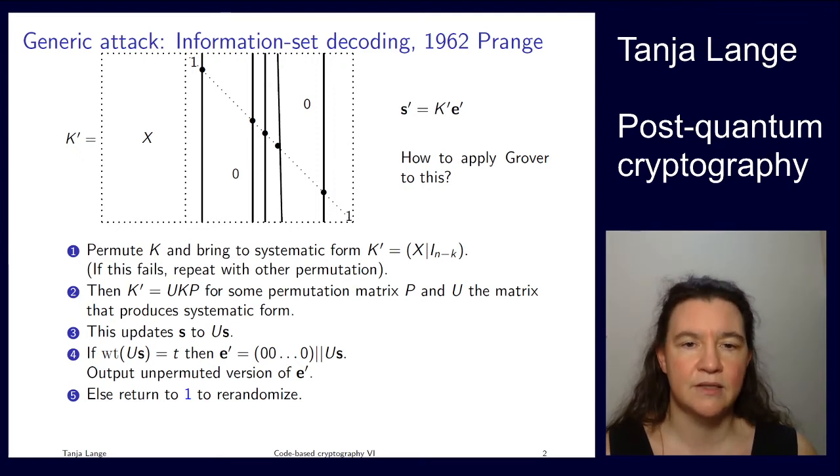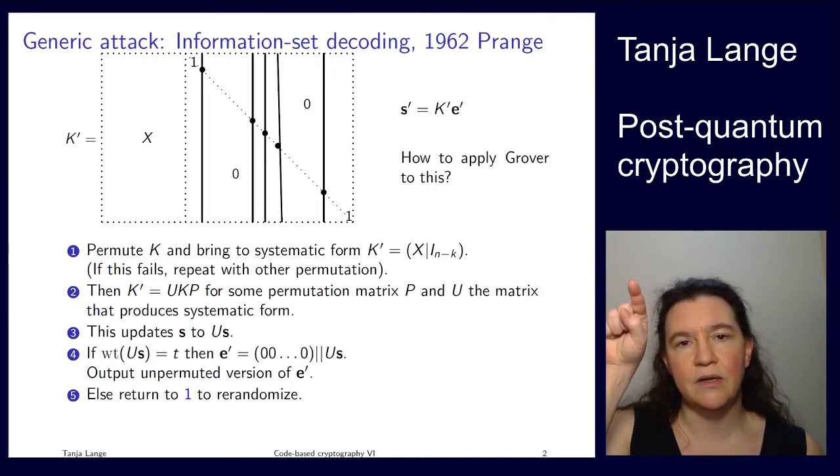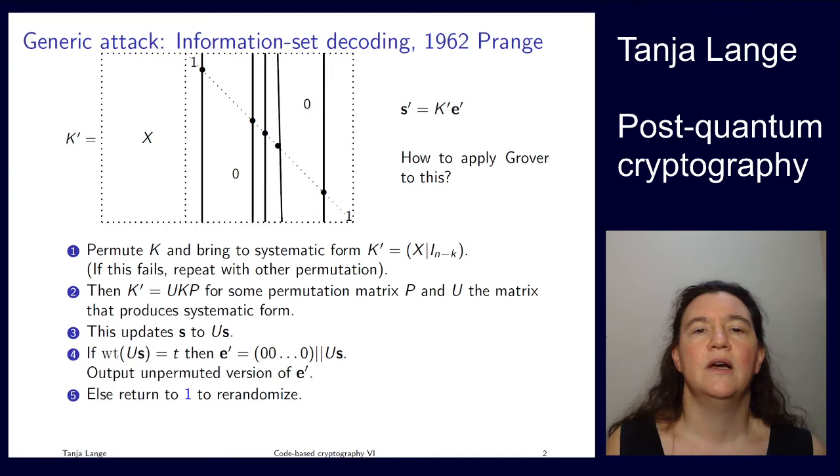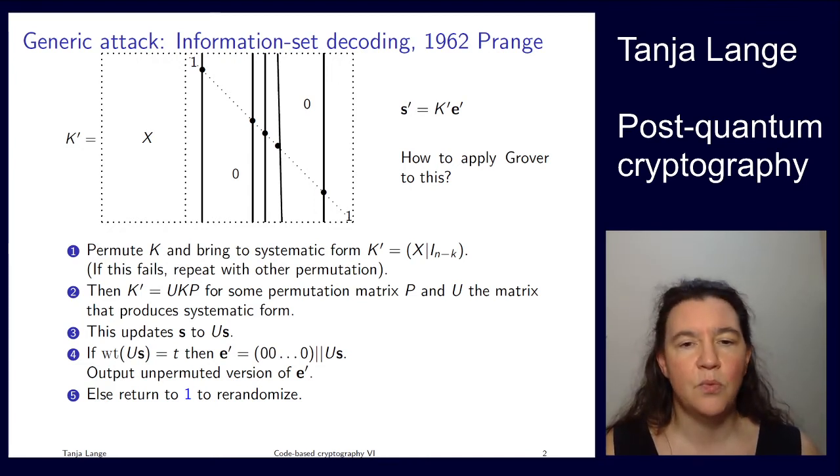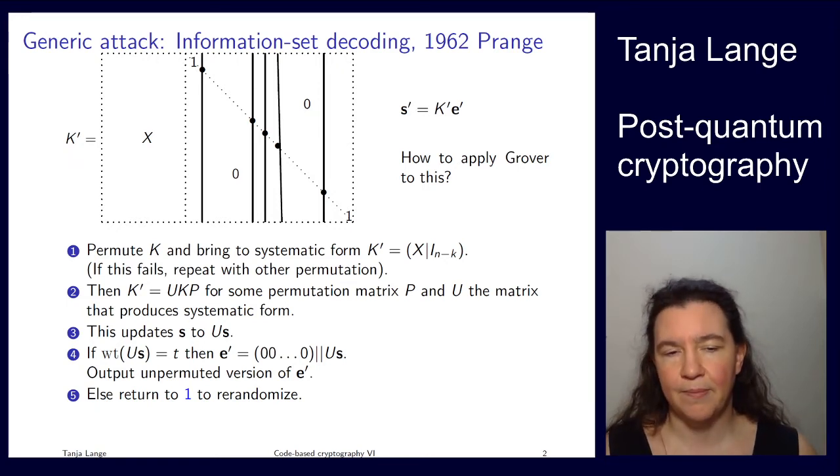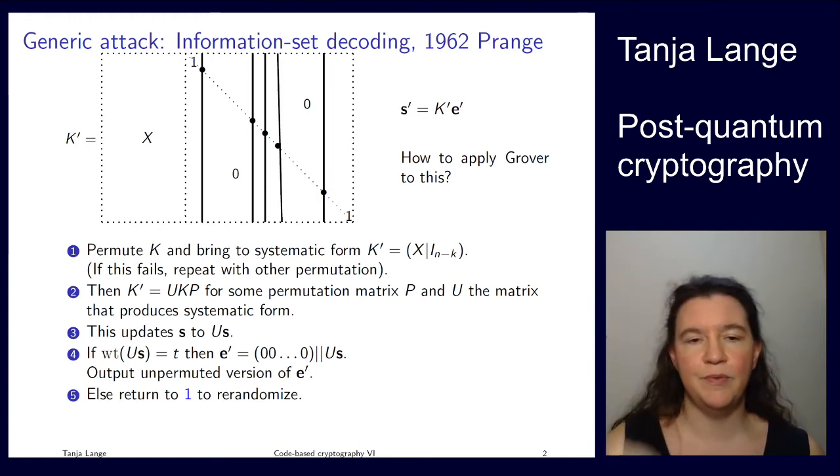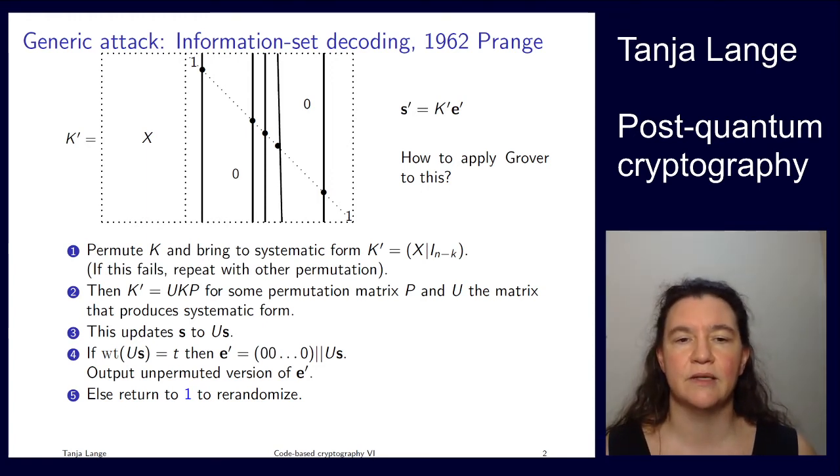This also updates this vector s to some s prime. And then we are wondering whether this one has a solution. So solution means that we are seeing exactly weight t on this s prime. So that means that there are exactly t positions which are selected, and t is the weight of the e that we are looking for. Now the e is permuted, so we have to unpermute this to get e prime. And if the weight wasn't t, then we return to the beginning. So we randomize and so on.